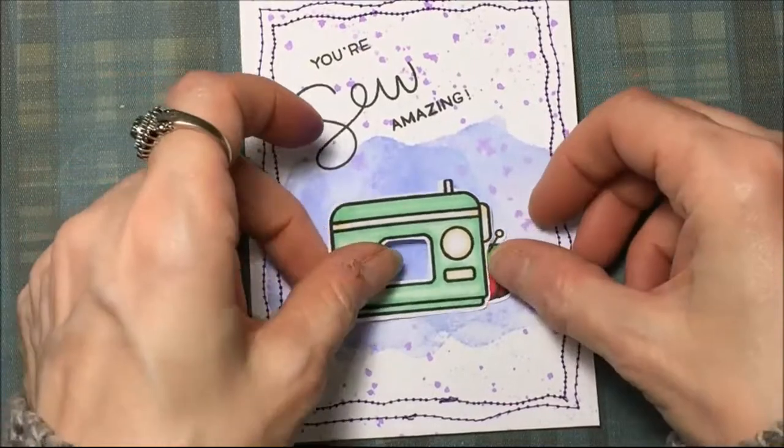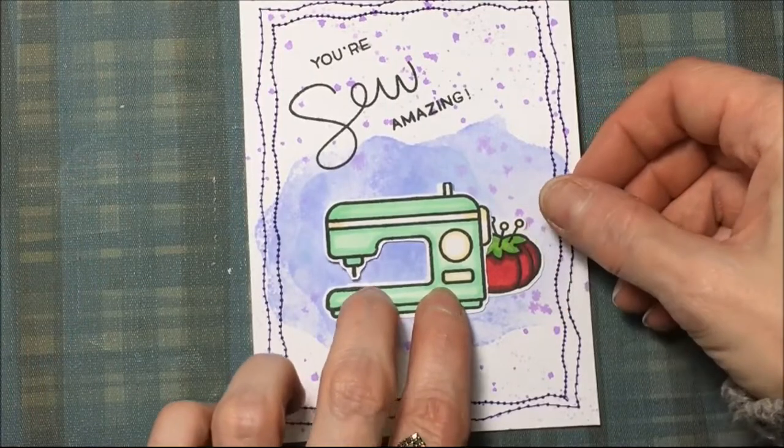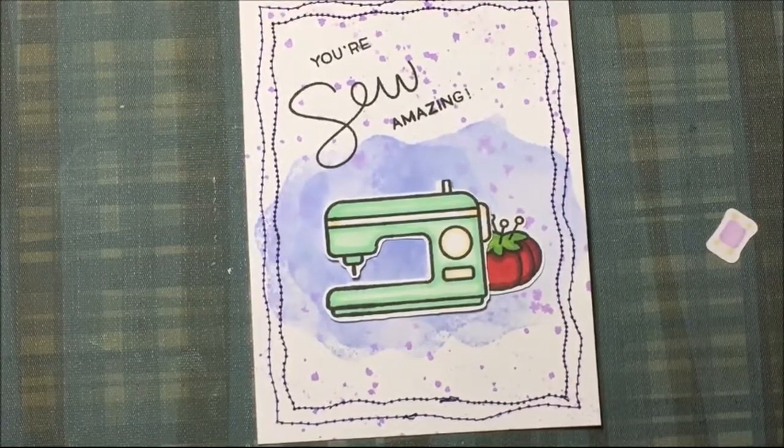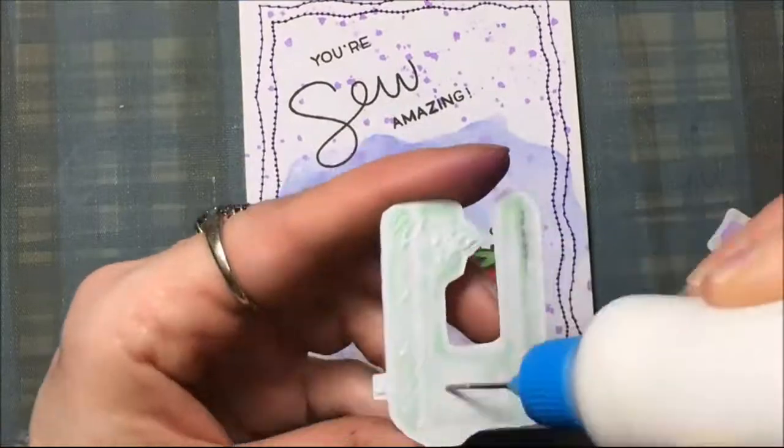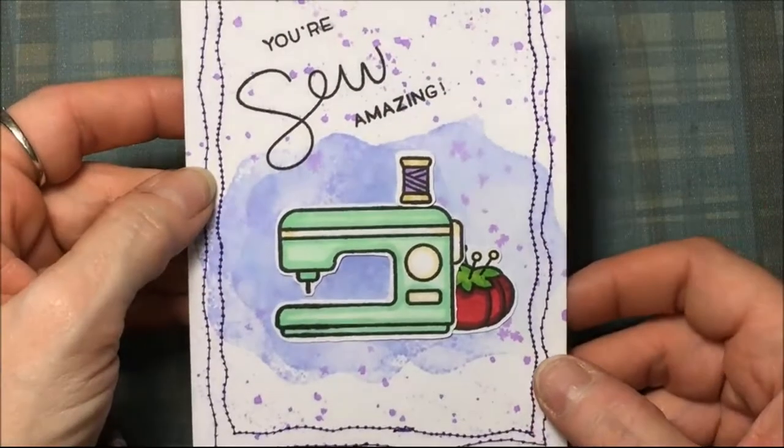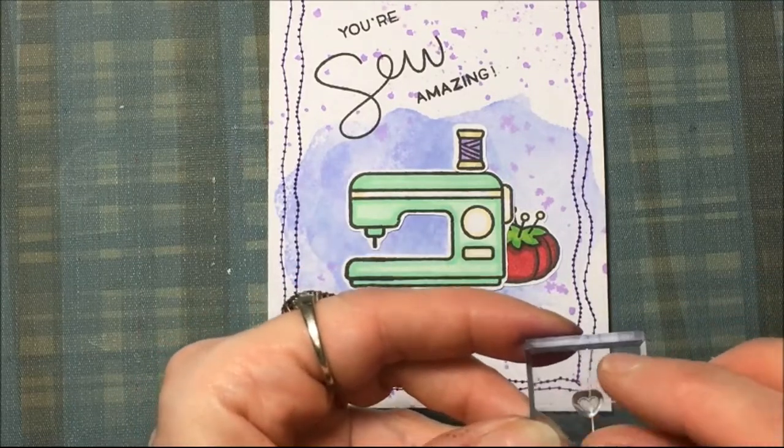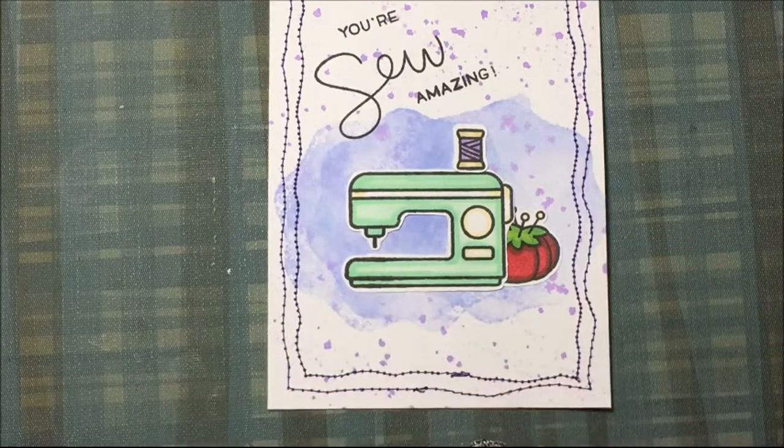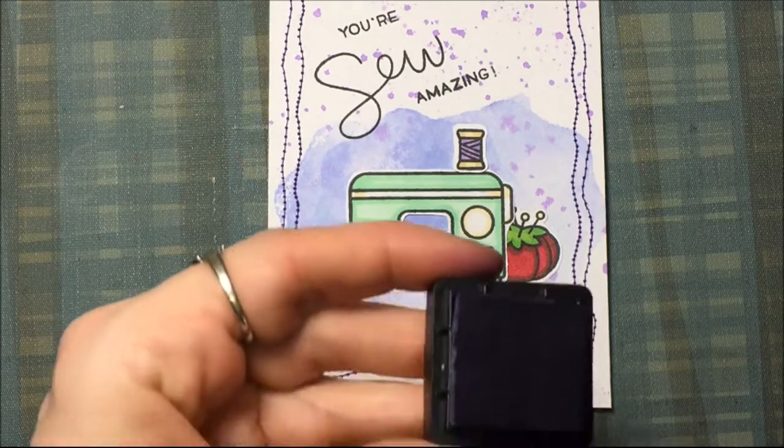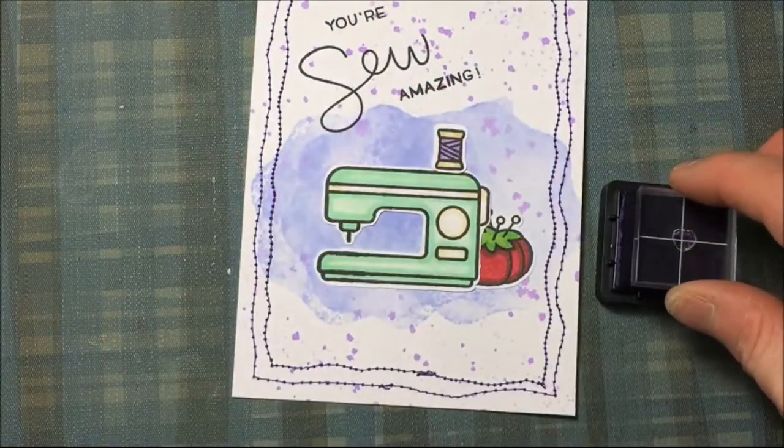Now I'm taking those images that I colored and cut out, and I'm deciding where I want them. Once I decide where I want them, I am going to use art glitter glue to glue them down. Then I decide I want to use that solid heart from the stamp set. I'm going to stamp that out in the middle of the sewing machine dial using that same dark purple Distress Ink Wilted Violet. I'm just going to stamp that heart right in the middle of that dial.